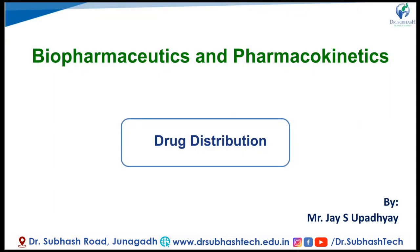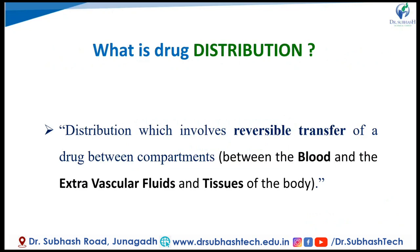Hello everyone. Today we are going to discuss drug distribution. Drug distribution involves the reversible transfer of drug between compartments — between the blood and the extravascular fluid or tissue in the body. After the absorption process, once the drug reaches systemic circulation, it goes for distribution from blood to the extracellular or extravascular fluid tissue of the body.